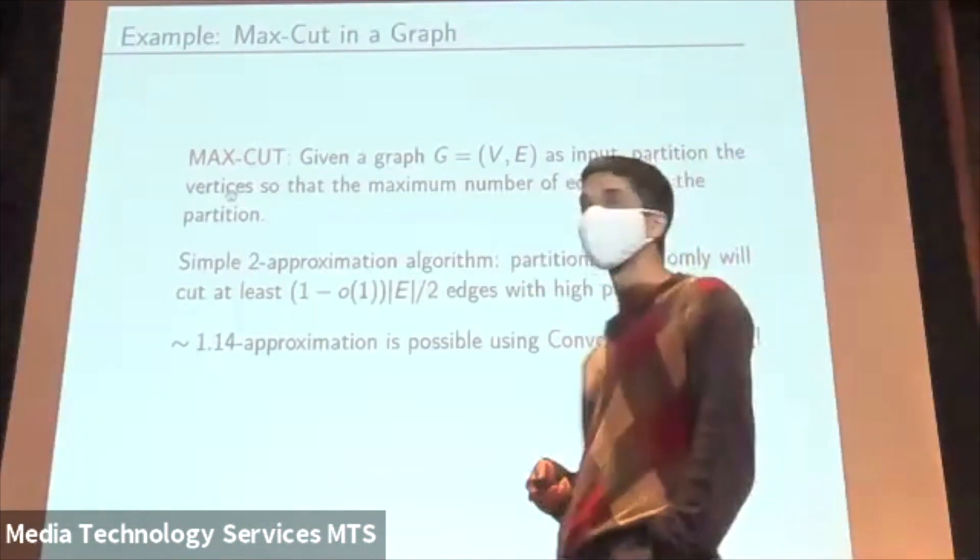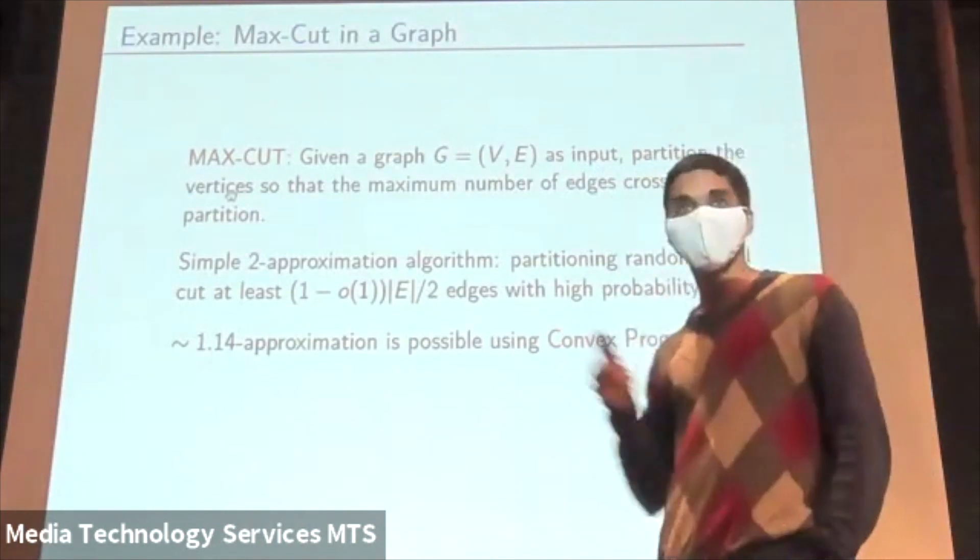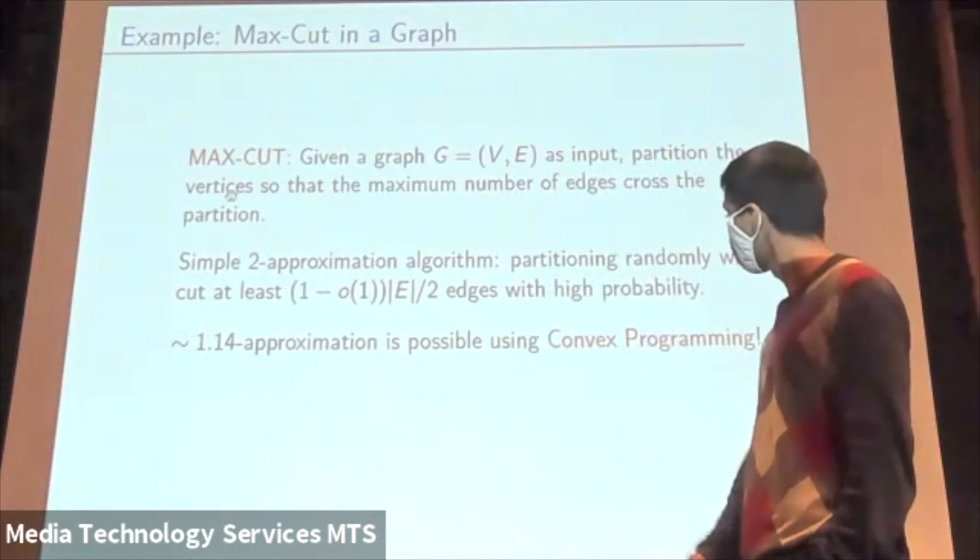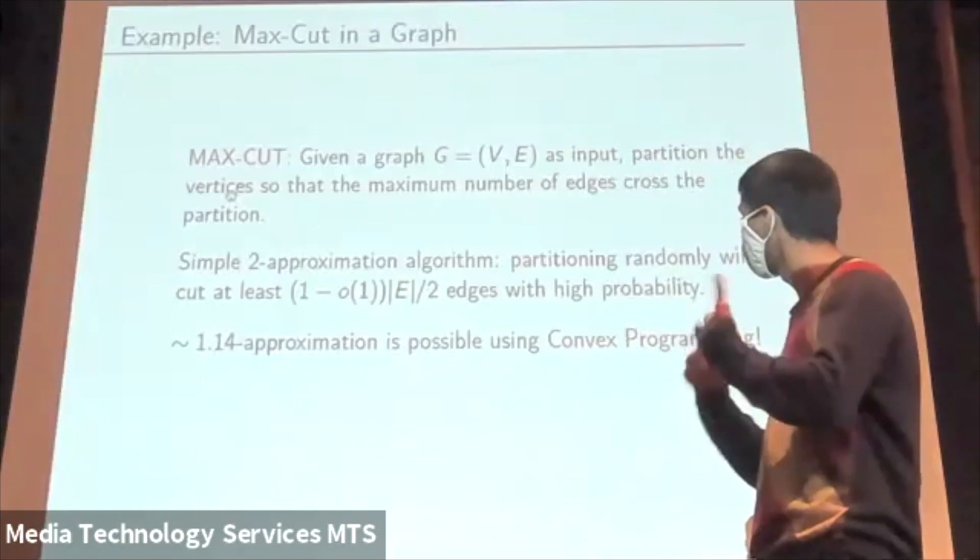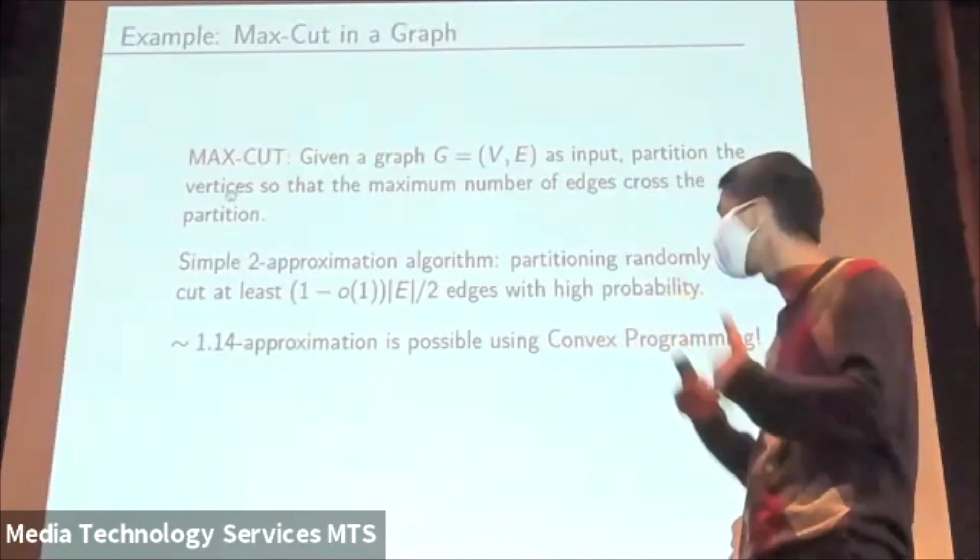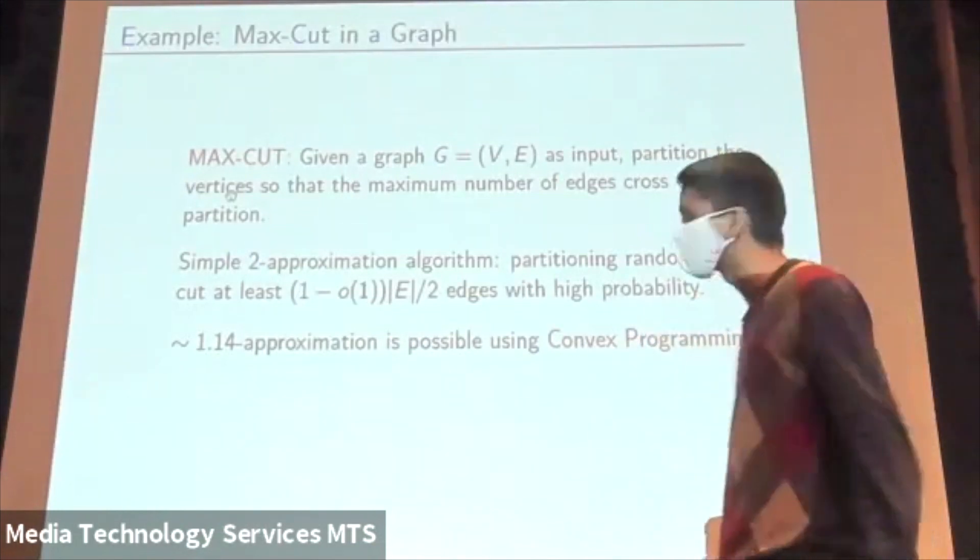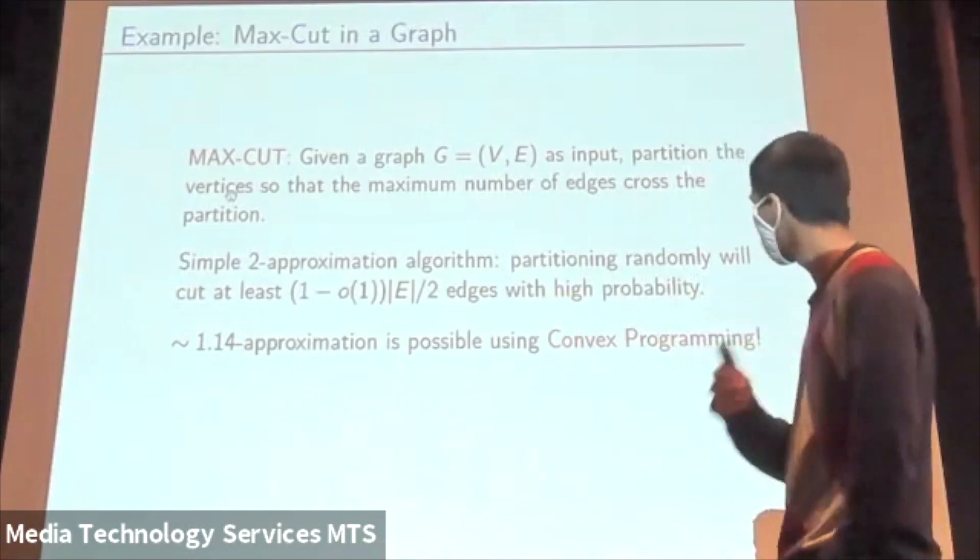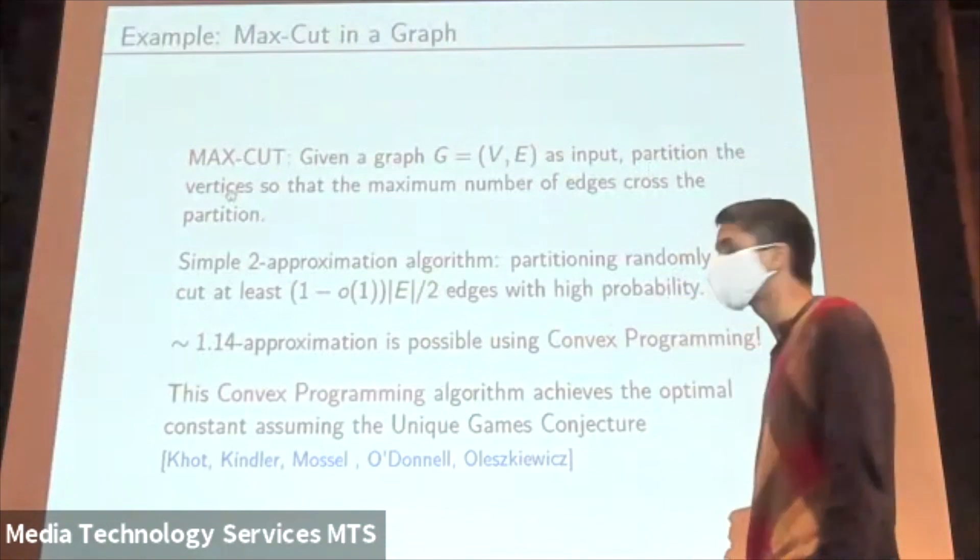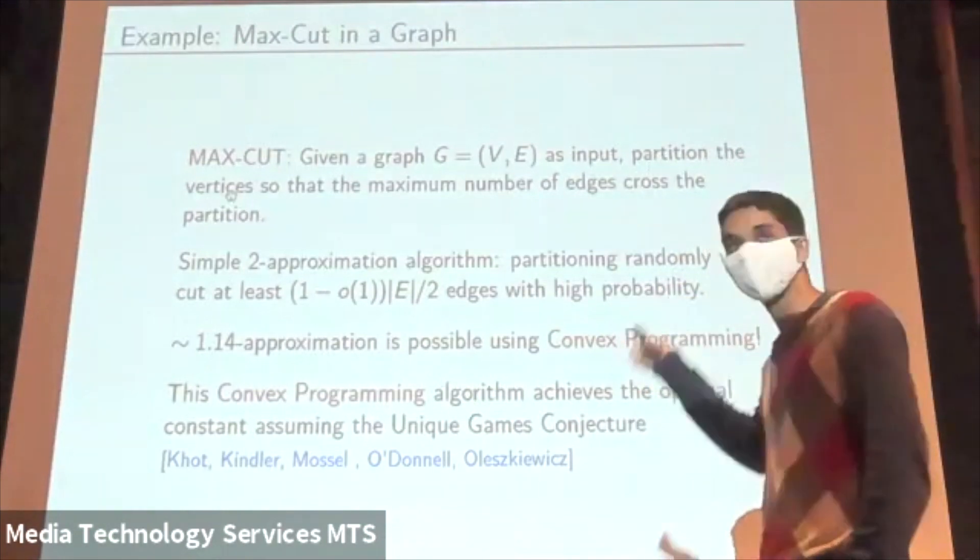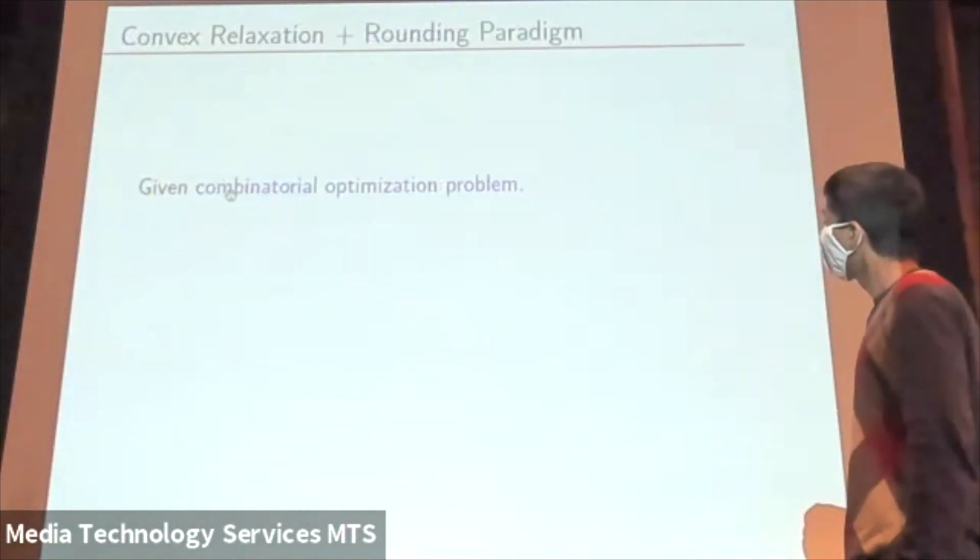It turns out you can do much better. You can actually get a 1.14 approximation algorithm using convex programming. I'm going to describe this in detail soon. But I'll start by speaking more generally about the general strategy in the area. How do we use convex programming to approximate certain optimization problems? And then I will instantiate it on max cut later in the talk. One remarkable thing is this convex programming algorithm actually achieves the optimal constant assuming some complexity theoretic conjecture.